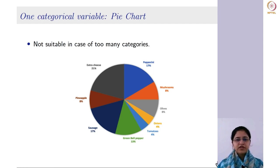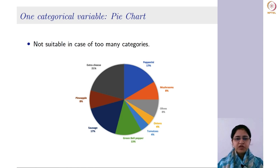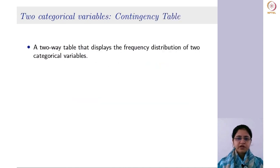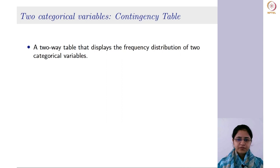For one categorical variable, you can draw a bar chart or a pie chart. Now suppose you have two categorical variables and you want to study the relationship between them. Before drawing that chart, we need a contingency table, which is basically used to study the relationship between two categorical variables. It displays the frequency distribution of these variables — or you can say it reflects what combinations occur how many times.